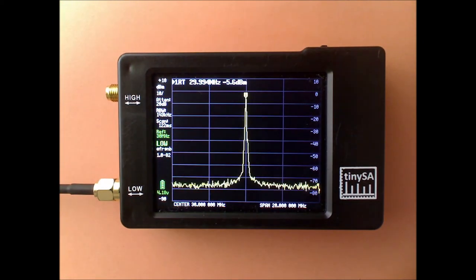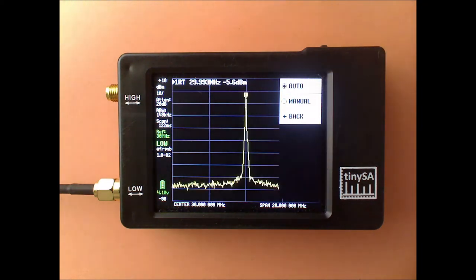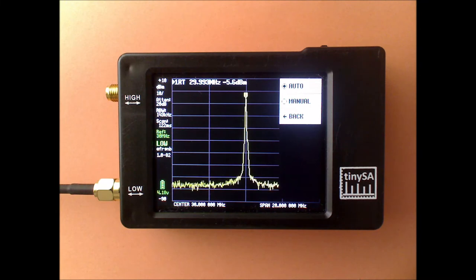The next setting on the level menu is the attenuate setting. Normally the attenuation is in auto mode and there the TinySA tries to find a good compromise between not too much noise and to prevent overloading of the TinySA.